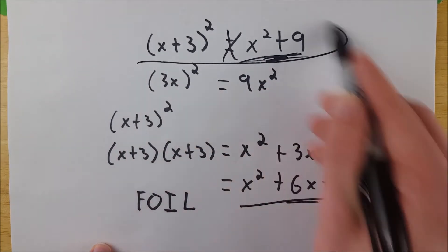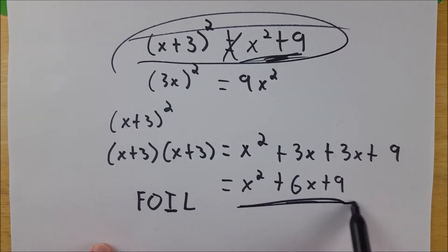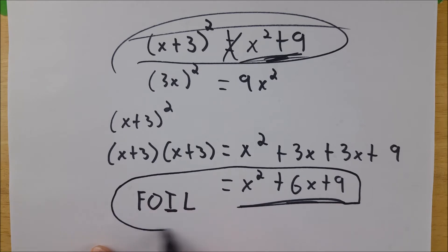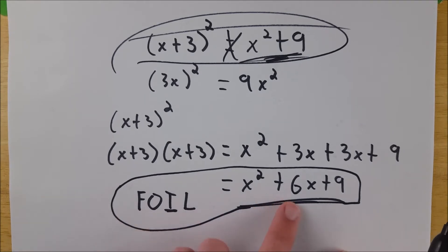So this is how not to FOIL. Don't do it like that. Do it like this. This is correct. And now that says FOIL equals this, which is not true. That doesn't mean anything.